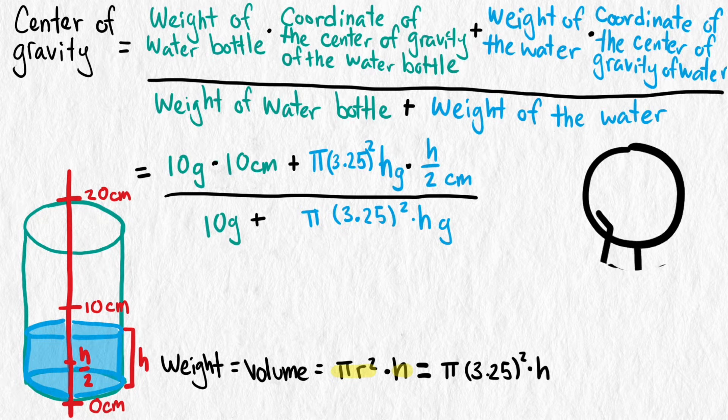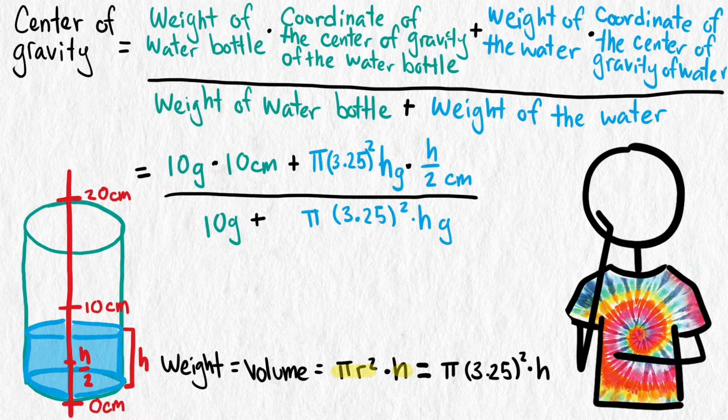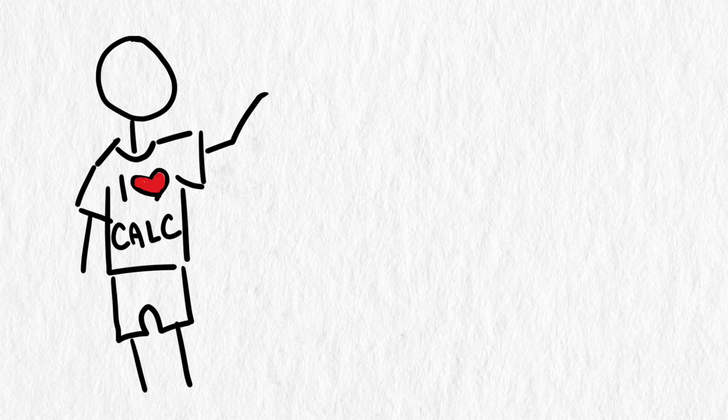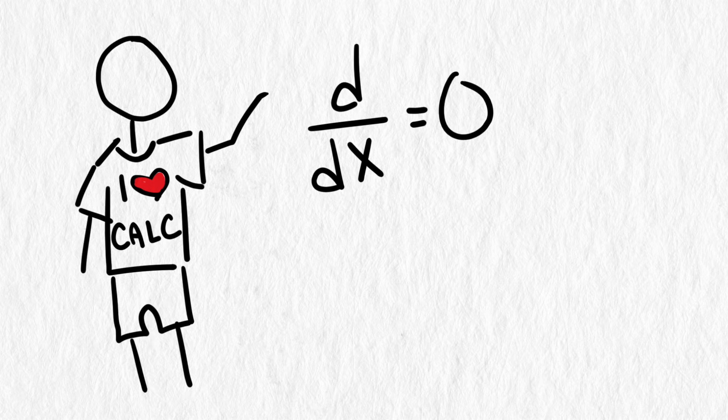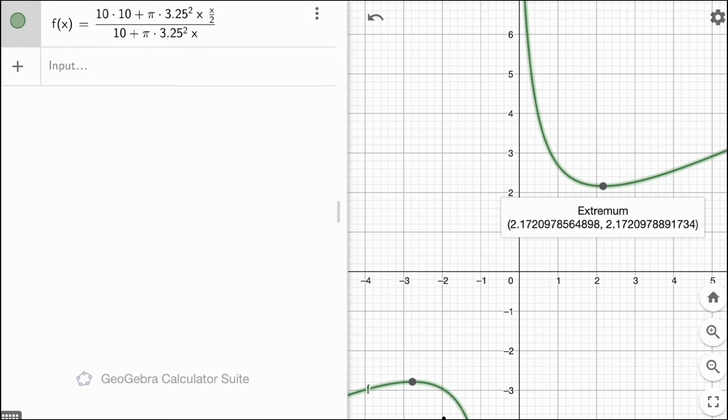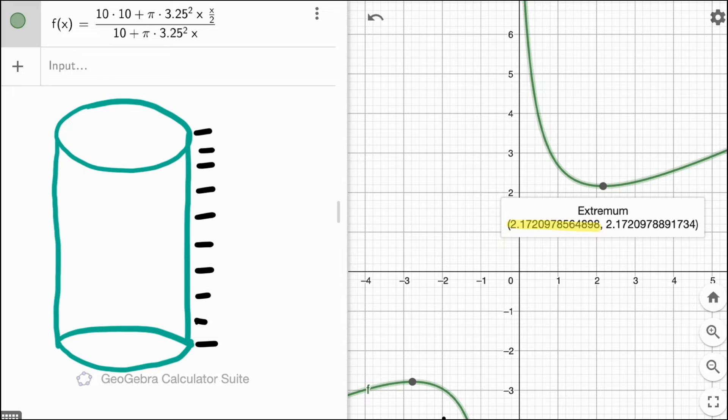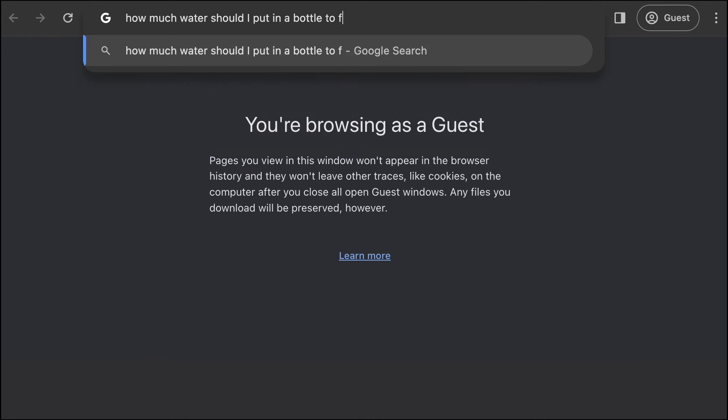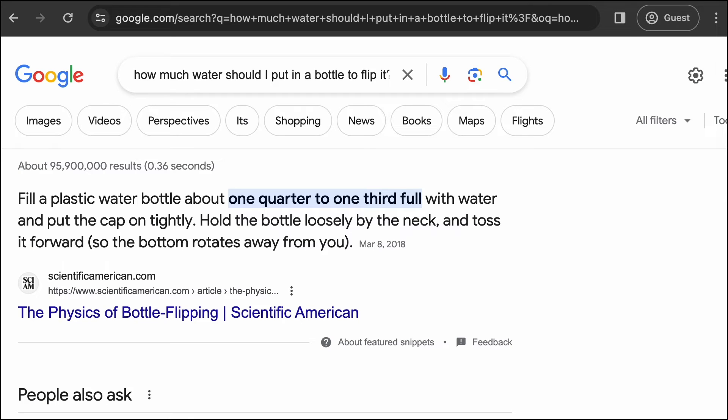So what value of h minimizes this function? That's the height of the water we want to put in our bottle. If you have a calculus background, you can find the derivative and set it equal to 0 and solve. We can also use a graphing facility to find the approximate value of h that gives the minimum. If you graph this function, you might have to represent the height variable as x in the graphing facility to get it to graph. The graph shows that a height of about 2.2 centimeters should be the optimal amount of water. That's about one-ninth the height of the bottle. That is a lot less than the suggestions online which say to fill the bottle one-quarter to one-third to the top.